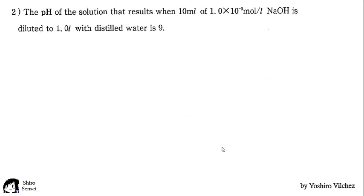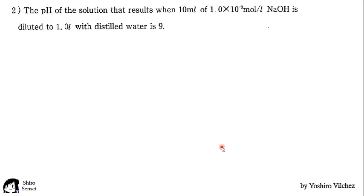The next one says, the pH of the solution that results when 10 milliliters of 10 to the minus 3 mole per liter of sodium hydroxide is diluted to 1 liter with distilled water is 9. We are going to do the same steps. Now, if this is a hydroxide, we are calculating the concentration of hydroxide ion.